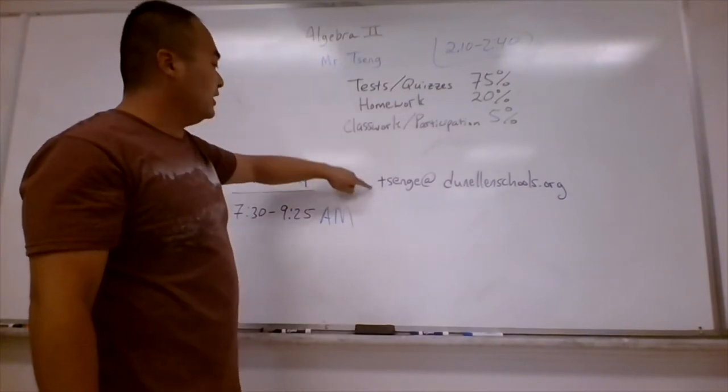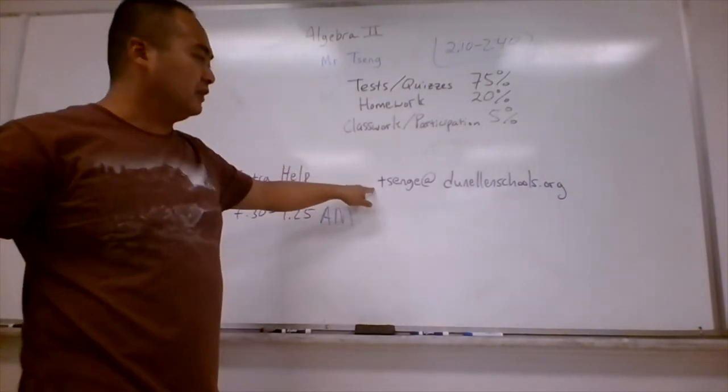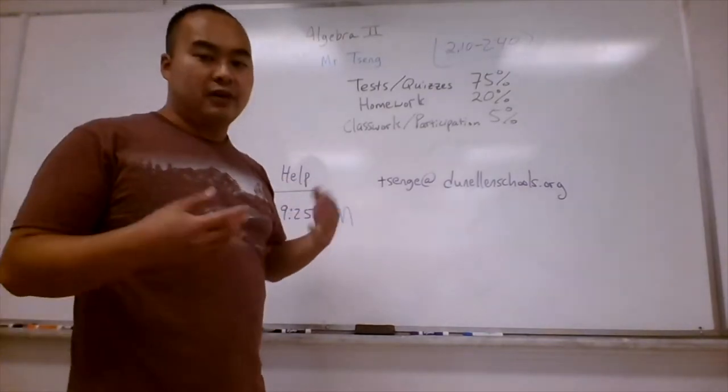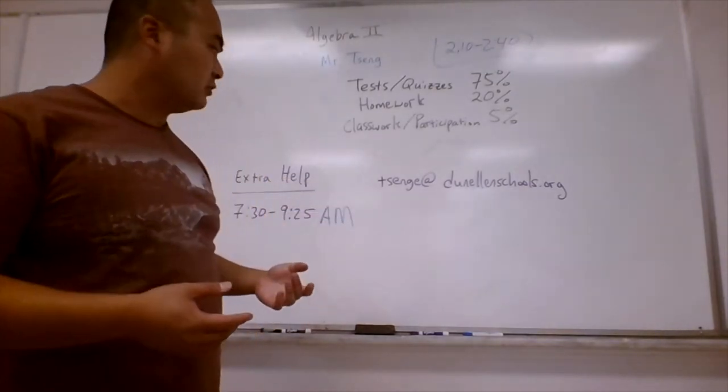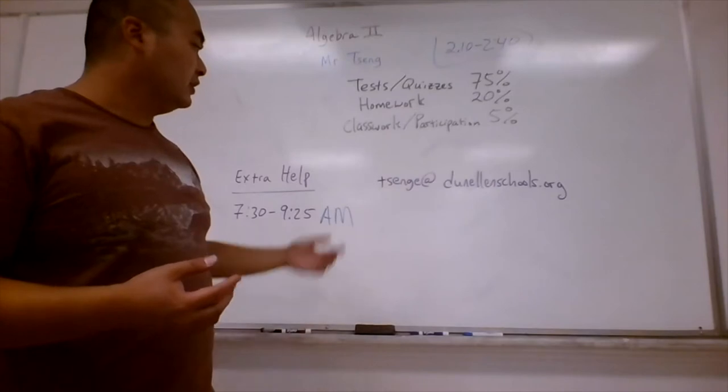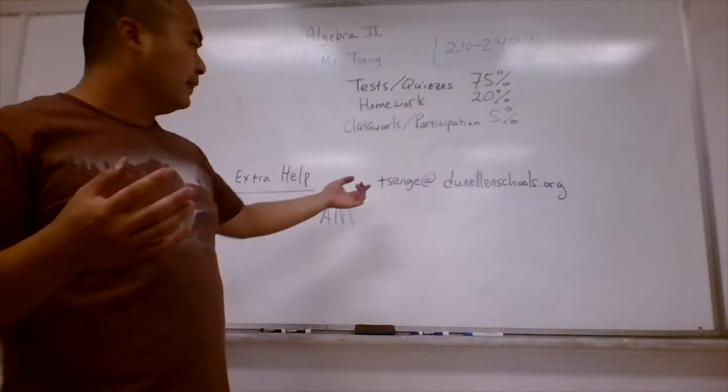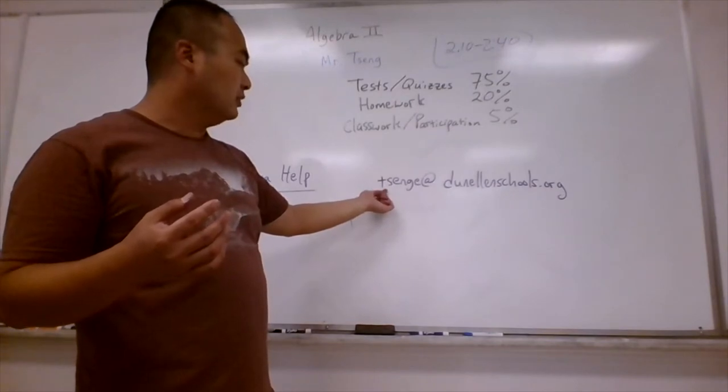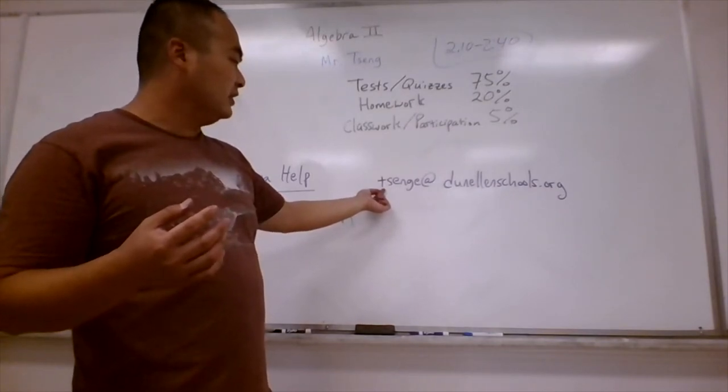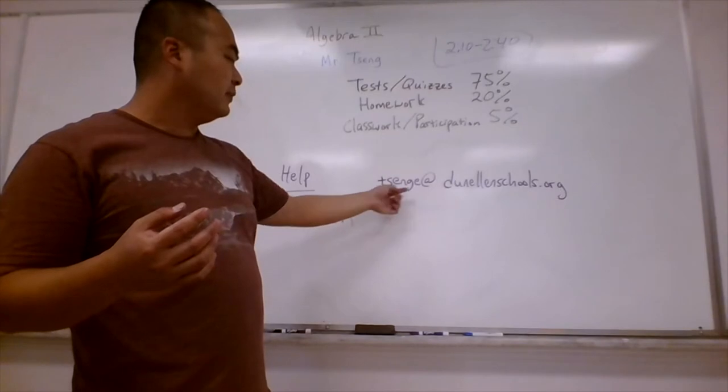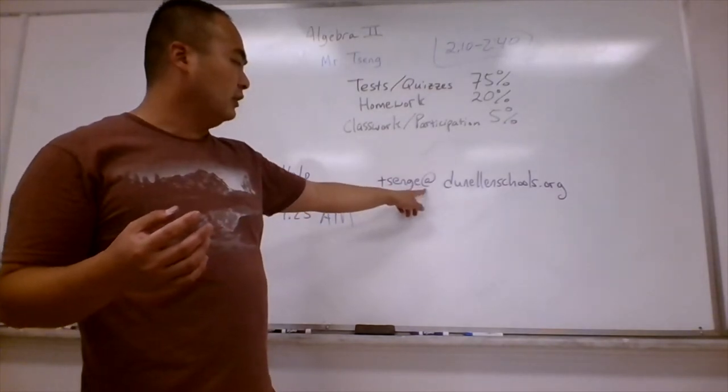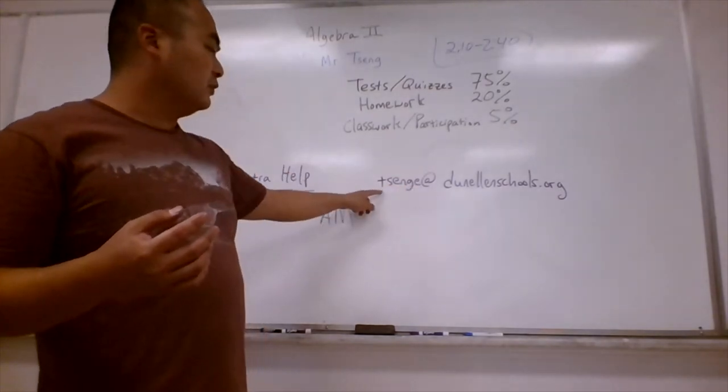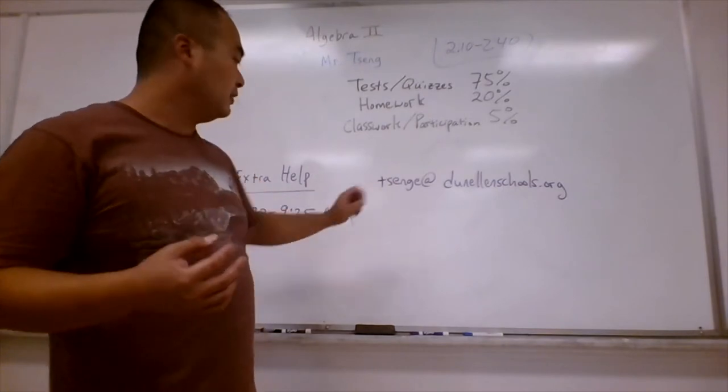The best way to contact me if you have any questions about your kid's progress, their grades, or if they're going to be absent is tsenge@danelschools.org. Once again, the email is T-S-E-N-G-E at danelschools.org. That is the best way to get in touch with me.